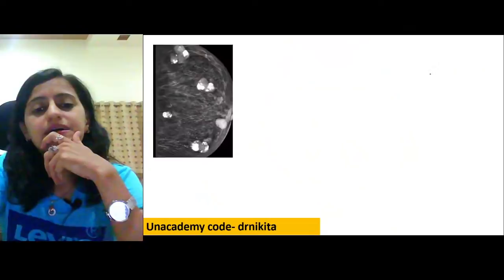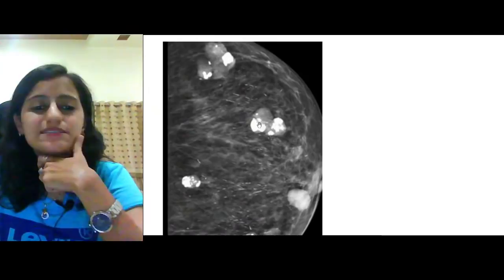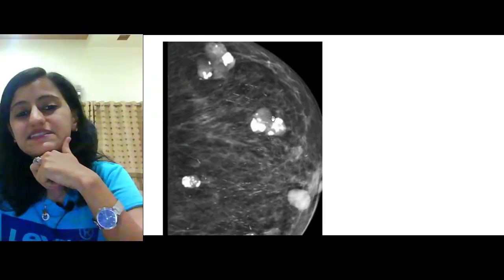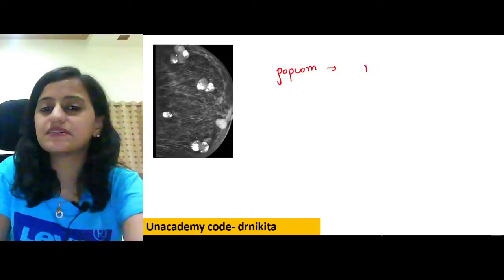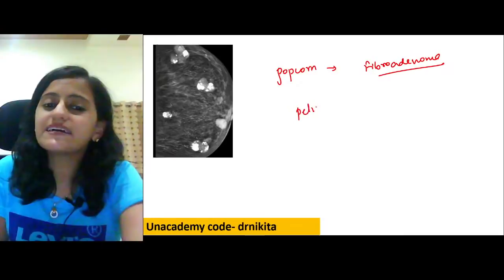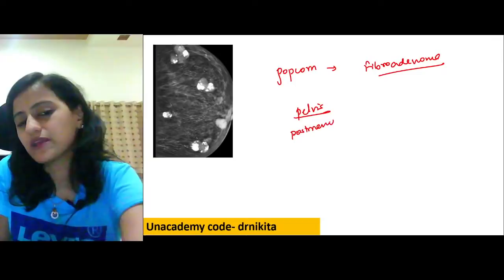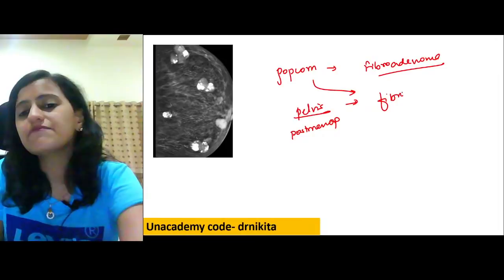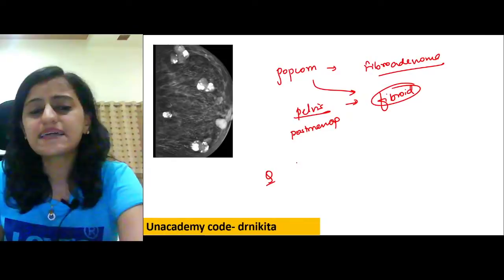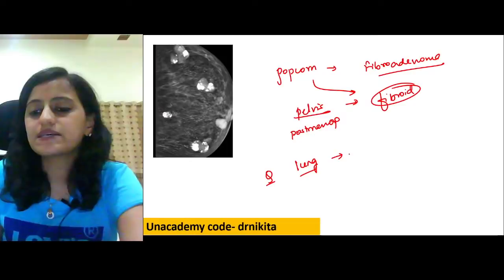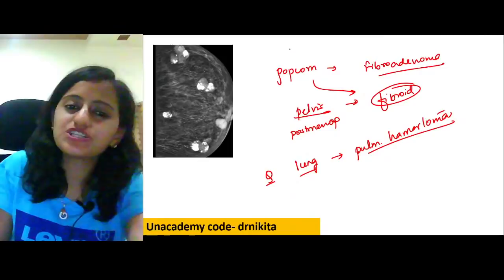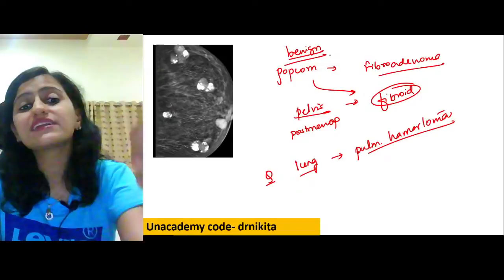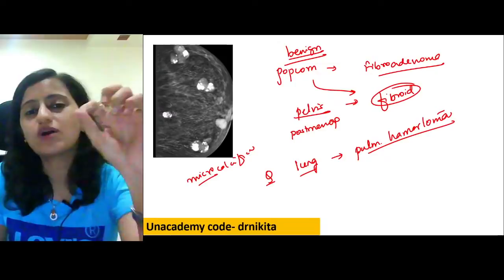On mammography, chunky popcorn calcification is fibroadenoma. Popcorn calcification on pelvic X-ray in a postmenopausal female suggests fibroid. In the lung, popcorn calcification suggests pulmonary hamartoma. Popcorn calcification is generally benign; microcalcification on mammography is the malignant concern.